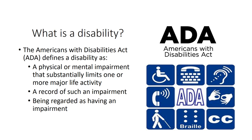The definition also includes those who have a record of or are regarded as an individual with a disability. Having a record of a disability means you may have had a disability, but it is no longer present or does not limit a major life activity. Being regarded as someone with a disability means others may assume you have a disability. Surgical scars or burns are examples of something that impacts your appearance but does not limit a major life activity. Although this does not make you eligible for accommodations, you are still protected from discrimination under the ADA.